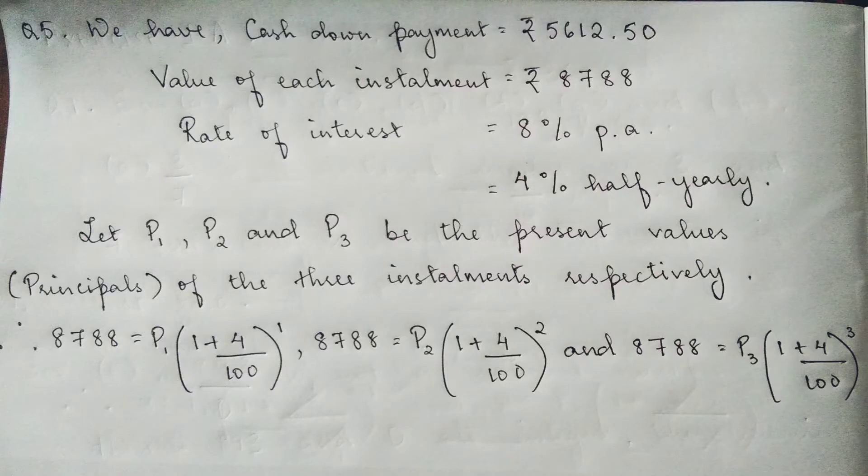So for the next step, we have 8788 which is the installment equals P1 times (1 plus 4 by 100) to the power of 1, and for the second and for the third as well.